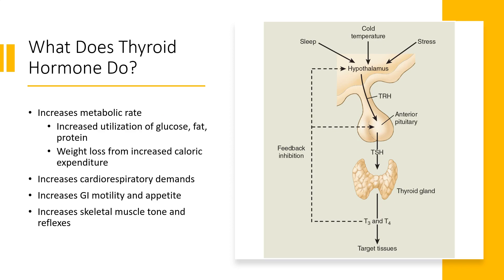What does thyroid hormone do? Thyroid hormone primarily regulates our metabolism. An increase in thyroid hormone will increase our metabolic rate. This increases utilization of glucose, fat, and protein, and promotes weight loss from increased caloric expenditure. Because metabolism requires the use of oxygen, an increase in thyroid hormone will increase our cardiorespiratory demands. It also increases GI motility and appetite, and thyroid hormone increases our skeletal muscle tone and reflexes.